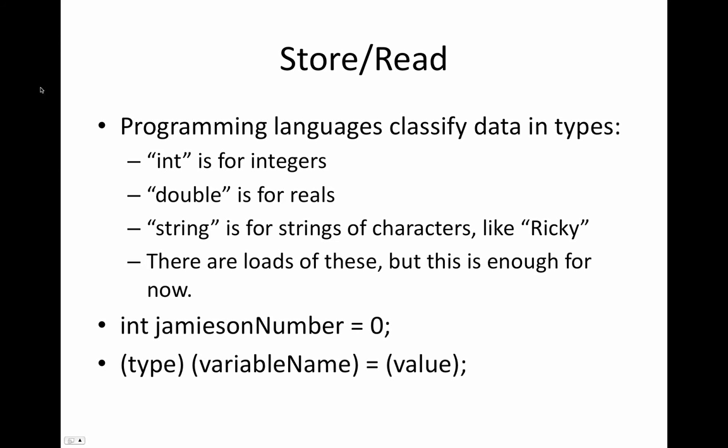So int is saying it's going to be that kind of value, and then we put a name on it, we say Jameson number, and then we say equals, and then we provide the value that we're going to be putting in it. So what the computer does when it sees this line is it's going to go to its infinite chest of drawers, get out a sharpie, find a drawer that's unoccupied, and write on it, Jameson number, then open the drawer and put a zero in it.